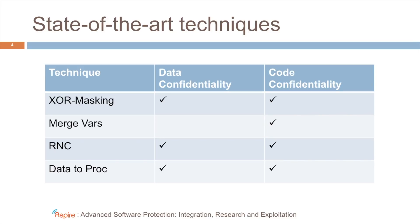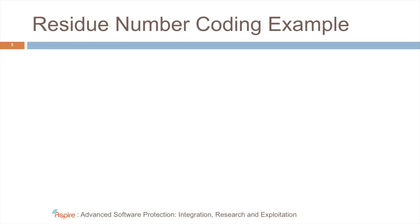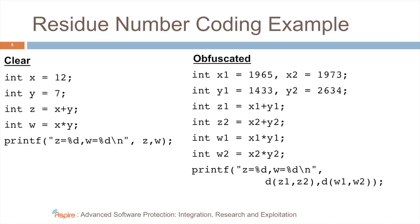Now, let's look at a more advanced example, in this case of residue number encoding. Here you see the clear program, and you see that the constants 12 and 7 are assigned to two variables. Also, in the binary code, these values will occur. In the obfuscated program, the original values do no longer occur, but instead some big numbers occur in the code, and those numbers can be randomized to some extent.